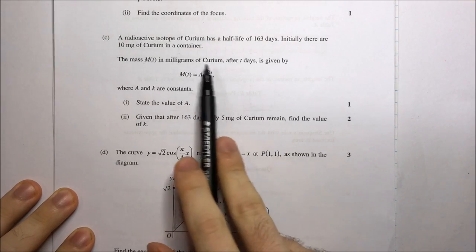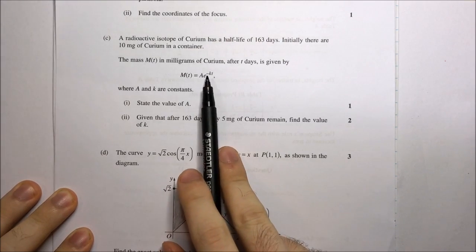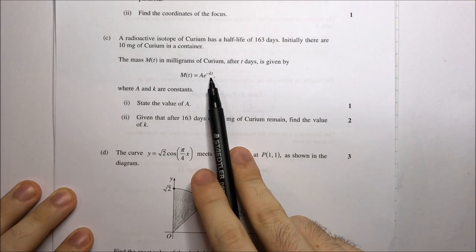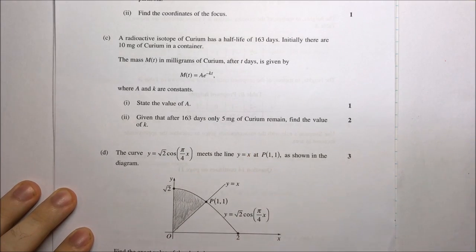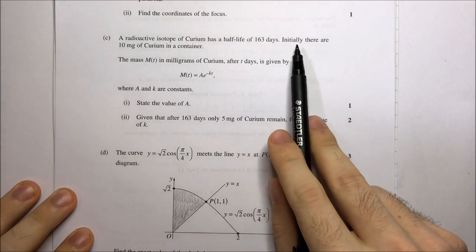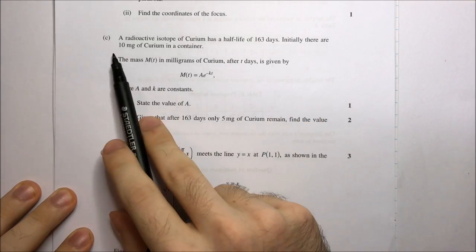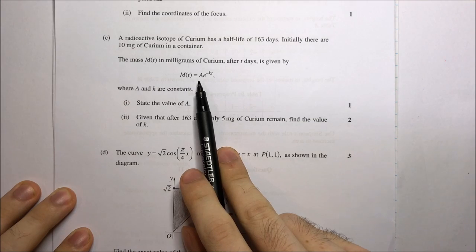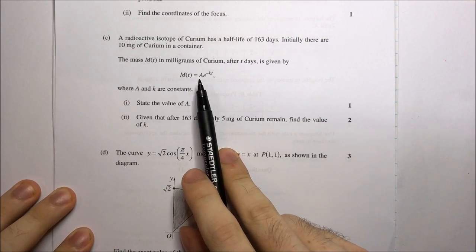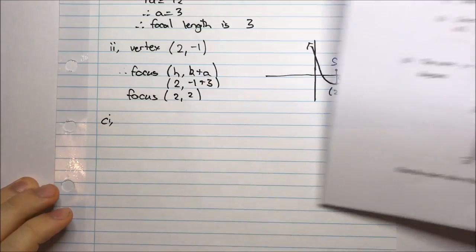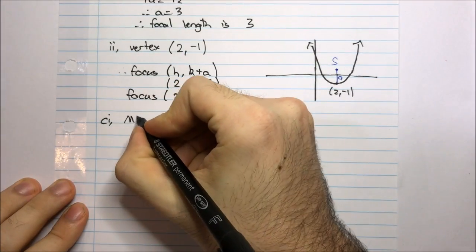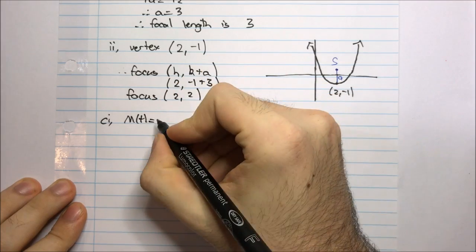In this form of exponential decay, the coefficient of the exponential is always going to be the initial value. We're told that initially there are 10mg of curium in the container, so we should know straight away that a is equal to 10. But if you're unsure, let's just write down this model — m(t) equals ae to the negative kt.